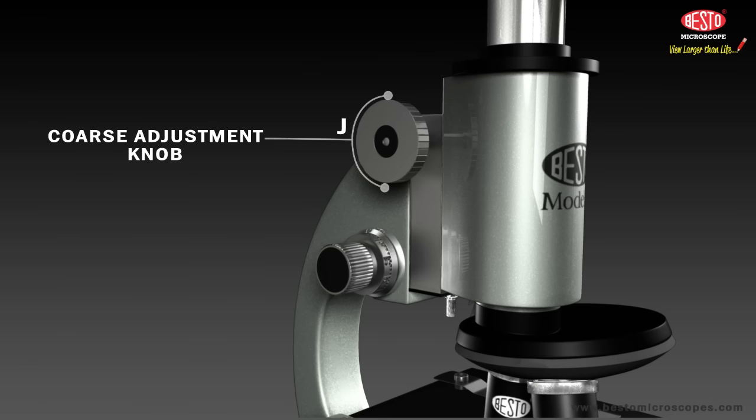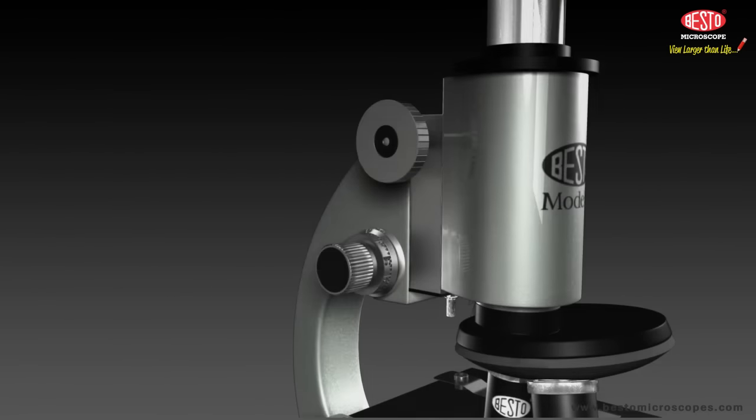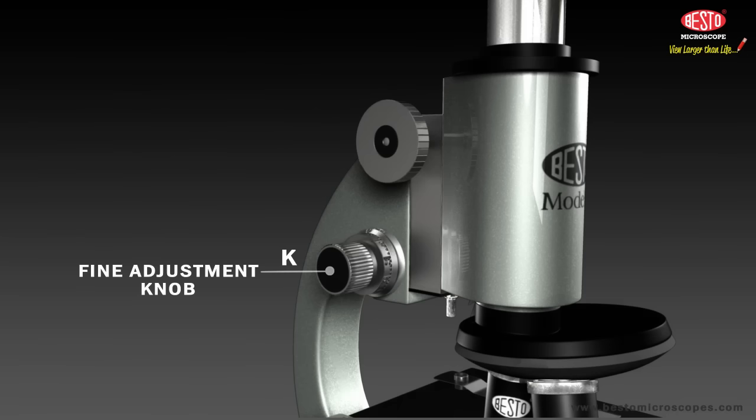K. The fine adjustment knob is the small knob used to change the position of the body tube by making small adjustments to the focus of your sample.